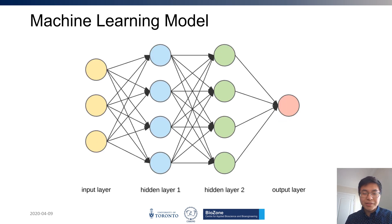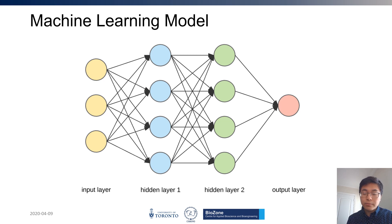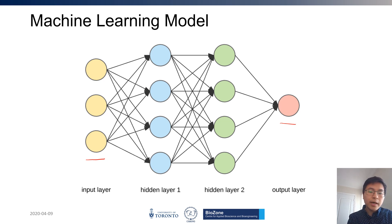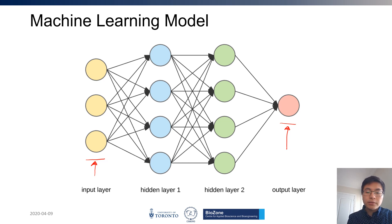Machine learning is essentially an input-output machine with a bunch of computation in between. The computations are matrix multiplications, which can be thought of as linear operations, followed by activation functions, which can be thought of as nonlinear functions. It's a composition of linear plus nonlinear, all chained together to get from your input to your output. This modularity of ML models makes it very versatile and customizable. For example, I could have the input layer be a protein sequence and the output layer just be a number, say predicting the brightness of a green fluorescence protein.